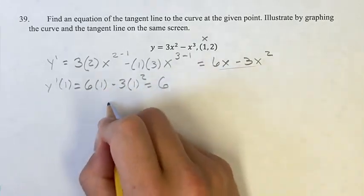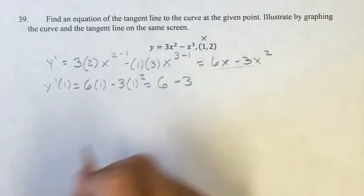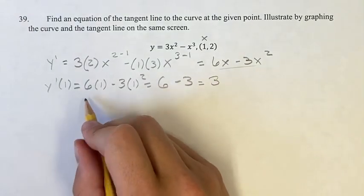6 times 1 is 6, 1 squared is 1, 3 times 1 is 3, so 6 minus 3. 6 minus 3 is equal to 3. So now we know our slope.